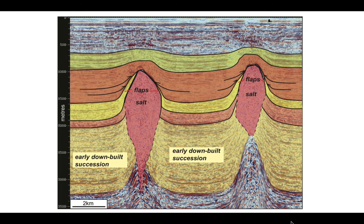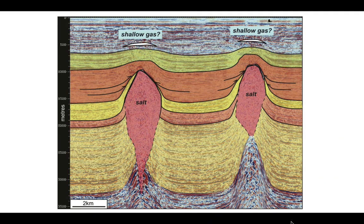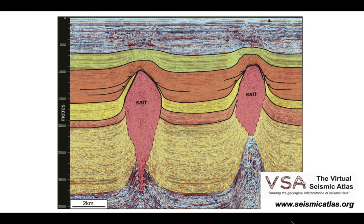While we're on this, let's look at the shallow part of the section I've not coloured in. Above the two salt bodies you can see some amplitude anomalies — slightly brighter amplitudes — which probably represent shallow gas. These are fairly common features associated with salt bodies, as the rising salt fractures the rock allowing gas to escape from deeper formations and accumulate in the shallow section. So there we have an interpretation of the seismic profile.